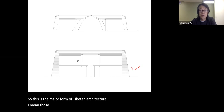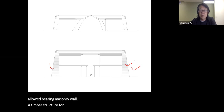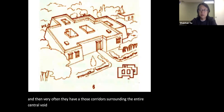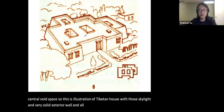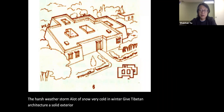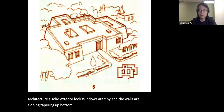This is the major form of Tibetan permanent architecture. Some of them are two stories — a load-bearing masonry wall, a timber structure for the roof, and a central skylight or courtyard, with corridors surrounding the entire central void space. The harsh weather — storms, snow, very cold winters — gave Tibetan architecture a solid exterior look. Windows are tiny and the walls are sloping, tapering upward: much thicker at the bottom and much thinner at the top, giving Tibetan architecture a characteristic trapezoid or letter shape.